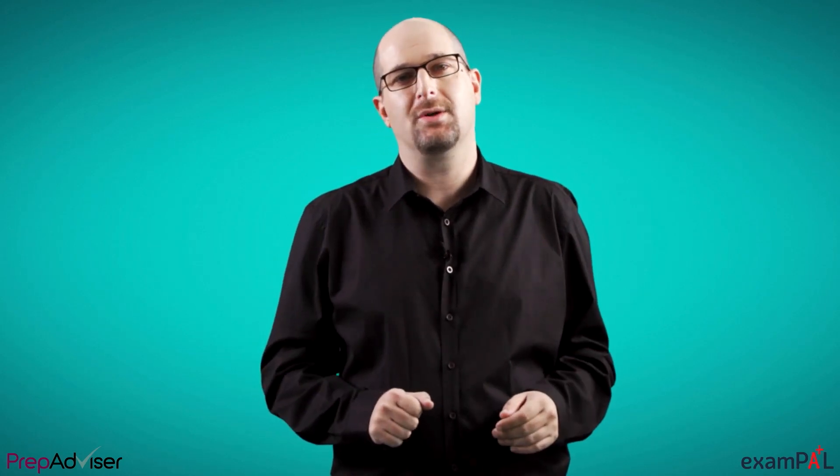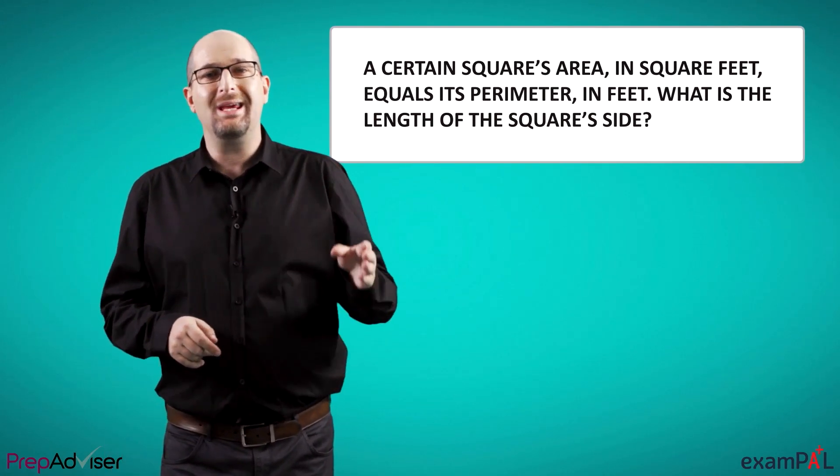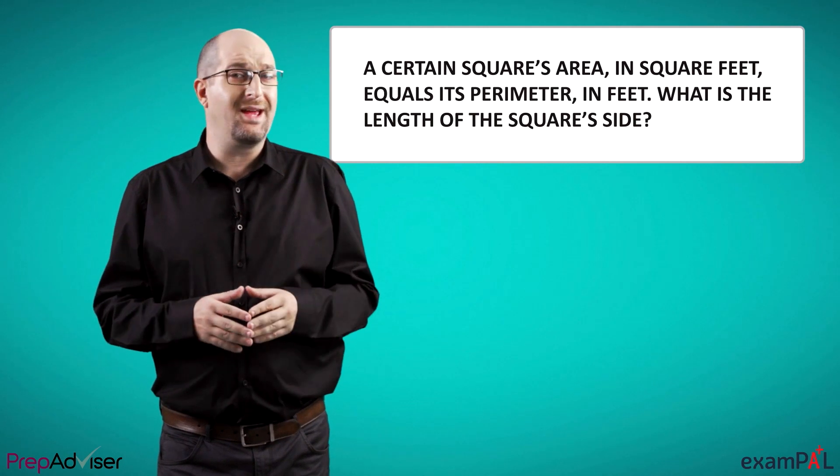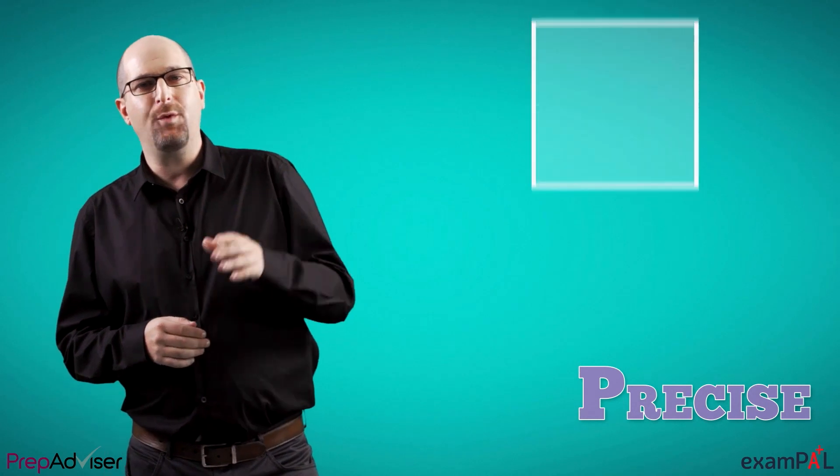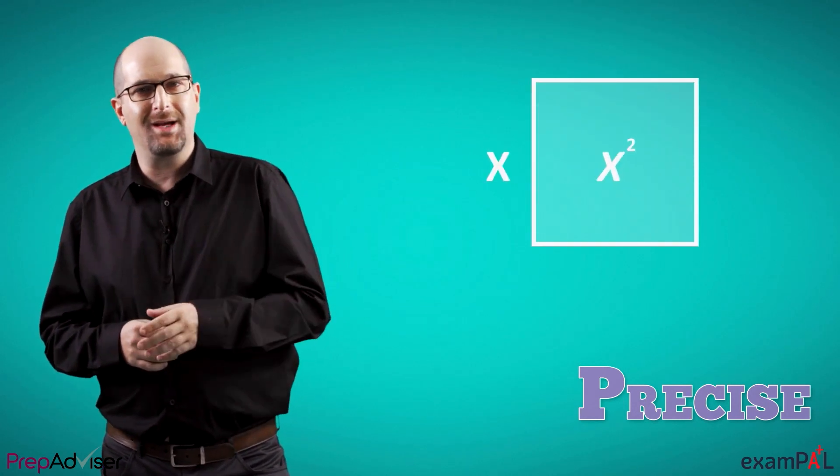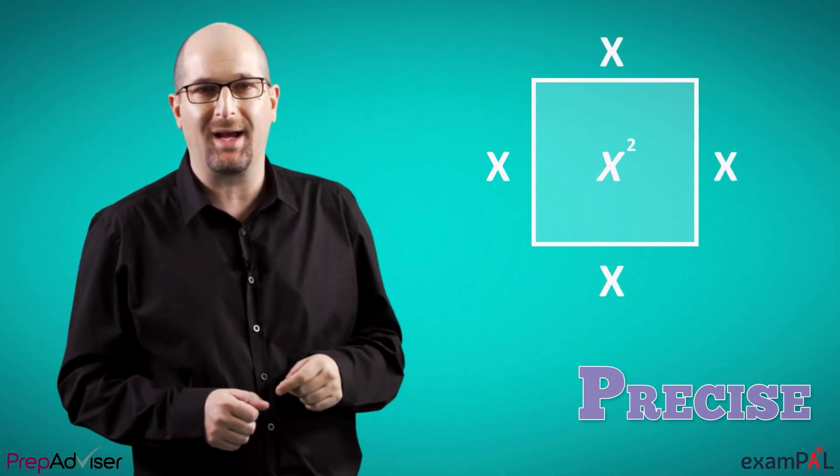Another thing we should ask is, does the question describe an equation? For example, if we are told that the area of a circle is equal to its radius, there's no need to draw it. We can just immediately write down an equation and get straight to the answer. A certain square's area in square feet equals its perimeter in feet. What's the length of the square's side? Well, since this question describes expressions which we know, let's use a precise tool and build an equation. If we mark a square's side as x, then its area is x squared. Meanwhile, its perimeter is 4x. So then our equation is x squared equals 4x. And we'll divide both sides by x so that we get x equals 4. That's our answer.